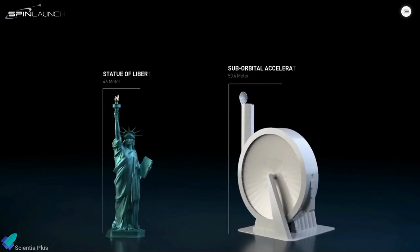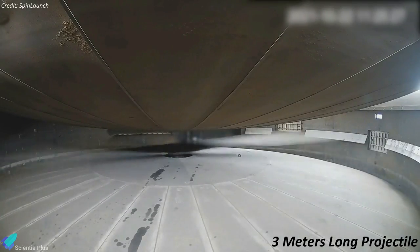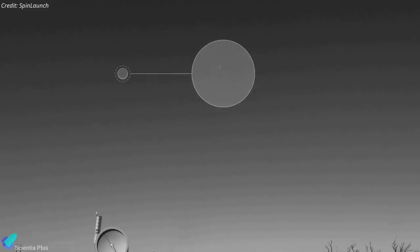For comparison, the suborbital accelerator is taller than the Statue of Liberty by 4.4 meters. That accelerator spun up a projectile 3 meters long, releasing it at high speeds into the skies, which is many thousands of kilometers an hour.